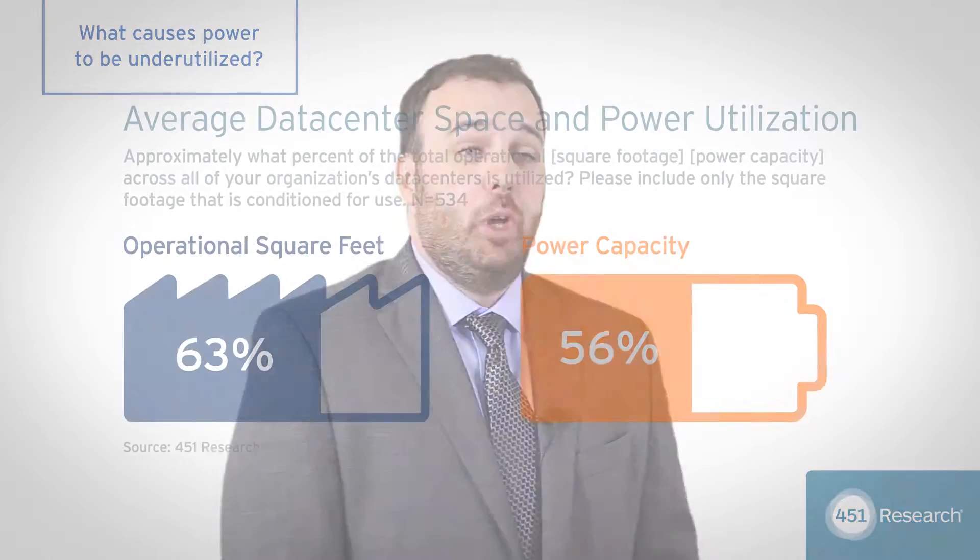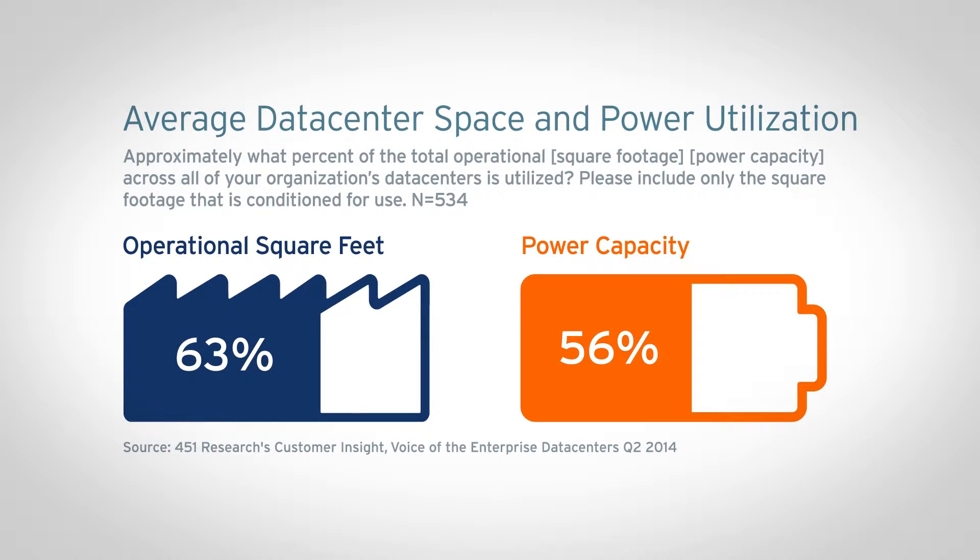Under-utilization has been an issue in data centers since data centers have been around. Even pre-virtualization, especially pre-virtualization, servers were often one-to-one. In addition to this, there's been a lot of over-building. Five, ten years ago, people built with the expectation that they would need a lot of server storage and networking. But because of those efficiencies, they've built these large data centers that maybe they're only 25 percent full or 50 percent full. So they're having to power these buildings with heating and cooling and power equipment, when in reality the space is mostly empty. That's extremely, extremely inefficient.